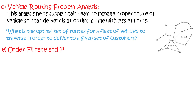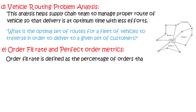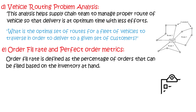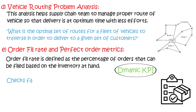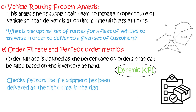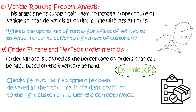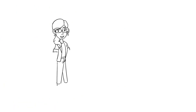Finally, order fill rate and perfect order metrics. Order fill rate is defined as the percentage of orders that can be filled based on the inventory at hand. The perfect order metric takes into account various metrics — it is a dynamic KPI that checks factors like whether the shipment has been delivered at the right time, in the right condition, to the right customer, and with the correct invoice.